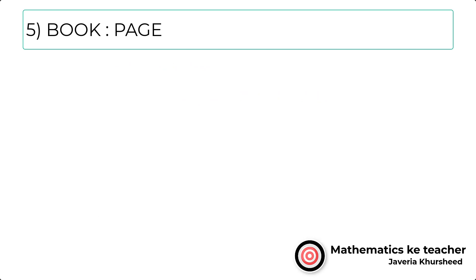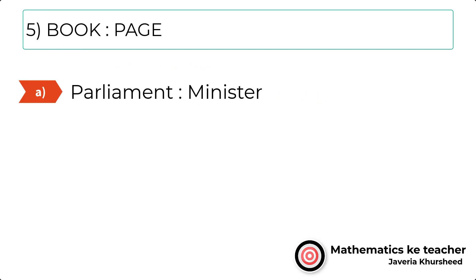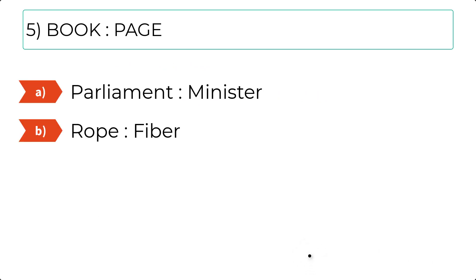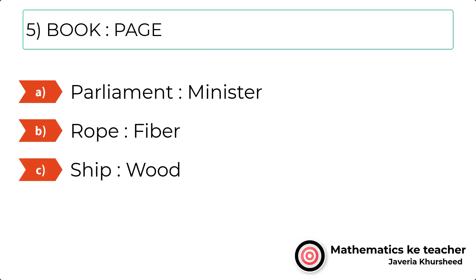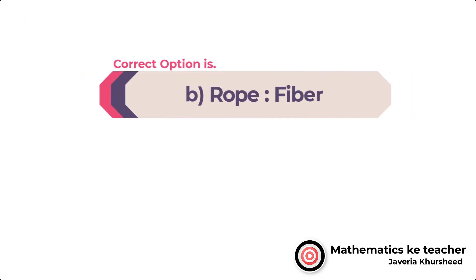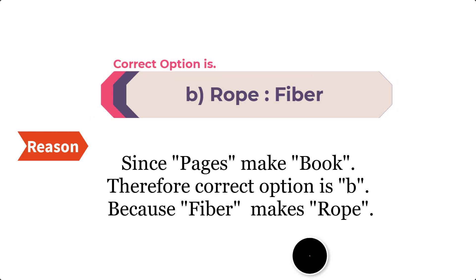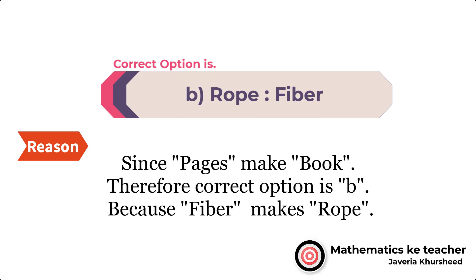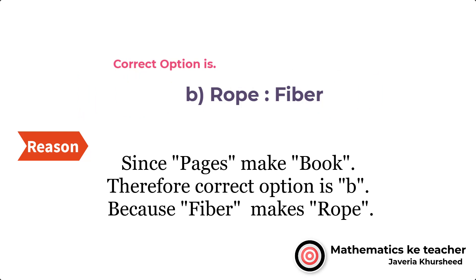Question 5: Book, Page. A. Parliament, Minister. B. Rope, Fiber. C. Ship, Wood. D. Star, Space. The correct option is B — Rope, Fiber. Since pages make a book, therefore the correct option is B, because fiber makes rope.